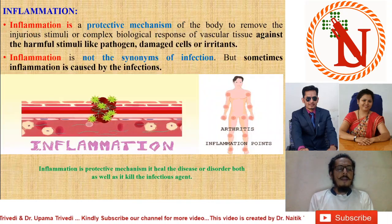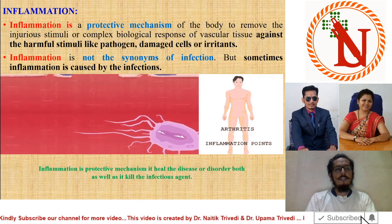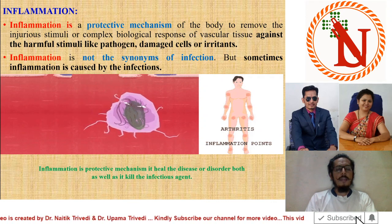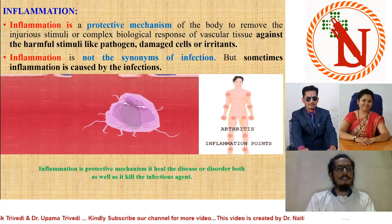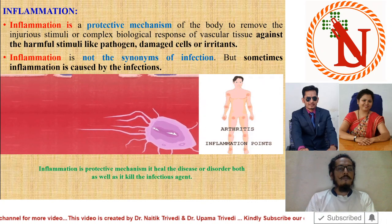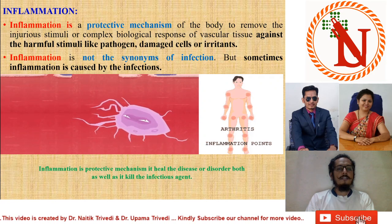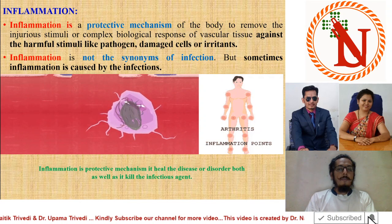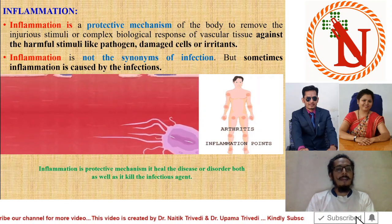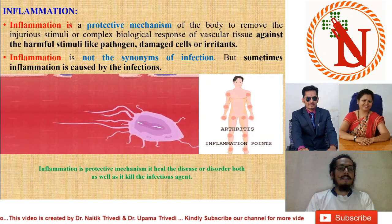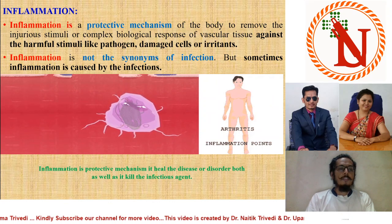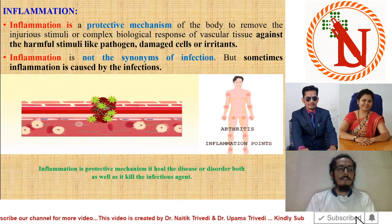Next is inflammation. Inflammation is a full chapter included in your syllabus, so I am giving you a brief introduction. Inflammation is the protective mechanism of the body to remove injury stimuli; it is a complex biological response of vascular tissue against harmful stimuli like pathogens, damaged cells, or irritants. In short, when a pathogen or damaged cell produces harmful injury, inflammation arises to repair or heal that injury. Inflammation is not a synonym of infection, but sometimes inflammation is caused by infection. The most suitable example is arthritis.